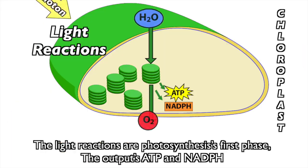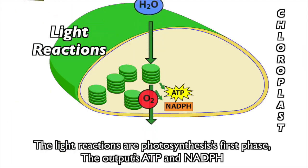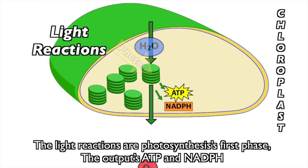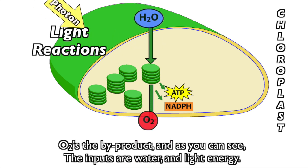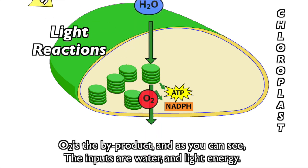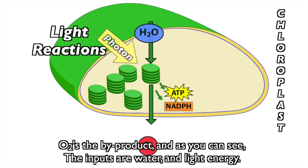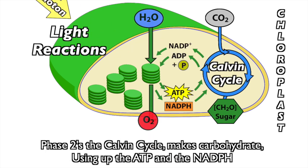The light reactions of photosynthesis is the first phase. The outputs are ATP and NADPH; O2 is the byproduct, and the inputs are water and light energy.